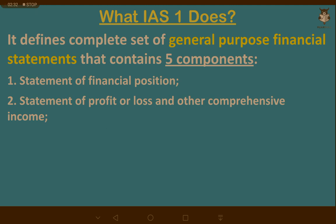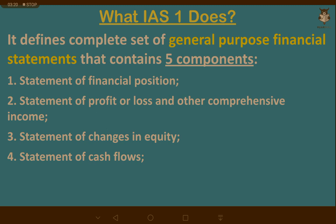The third component is the Statement of Changes in Equity, which deals with transactions between the company and its owners. If equity increases because owners injected more money, that goes into the Statement of Changes in Equity. If the company pays a dividend, that also goes into the Statement of Changes in Equity. Anything arising from owner transactions with the company goes into this statement.